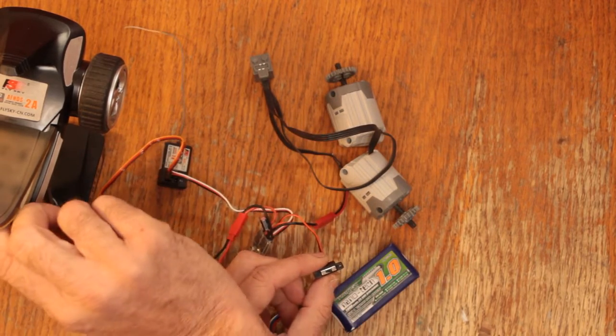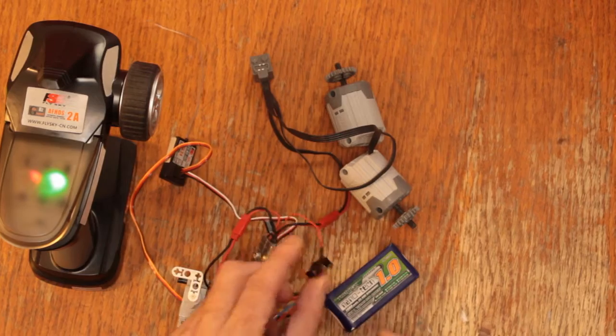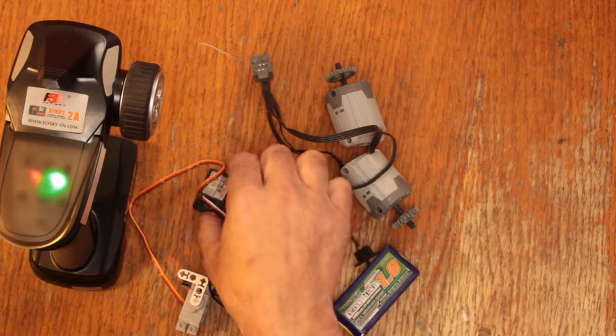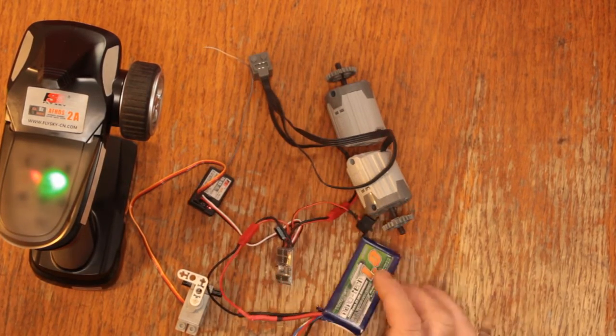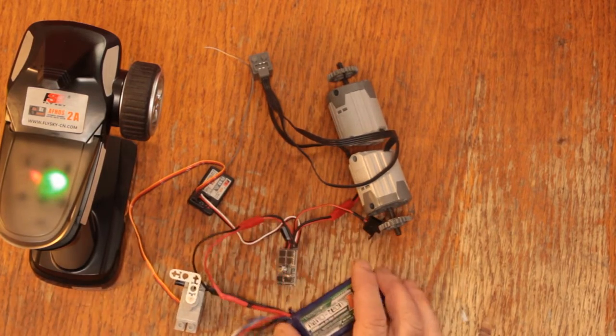So we'll power on the transmitter, power on the radio, we've got a solid light on the radio so that means it's communicating to the transmitter and the ESC is flashing ready to go.